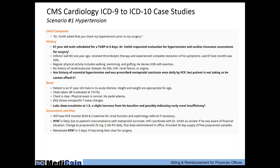Thank you, Dr. Beyer. The first scenario is related to hypertension. The patient is an 81-year-old male scheduled for a TURP in five days, presenting to have his hypertension checked prior to surgery. He has a history of essential hypertension, was prescribed blood pressure medicine once a day by his PCP, but is not taking it because he can't afford it. Labs show creatinine at 1.5, a slight increase from baseline possibly indicating early renal insufficiency. The assessment states hypertension is likely due to patient's noncompliance, with reevaluation in three days — if improving, he's cleared for surgery.